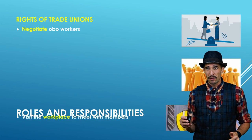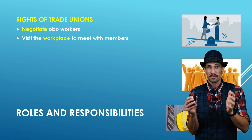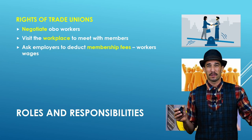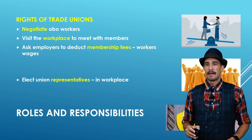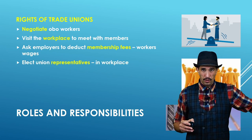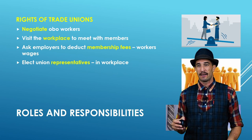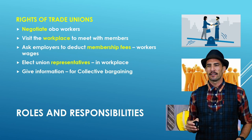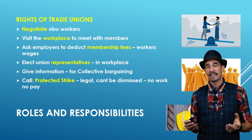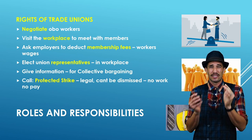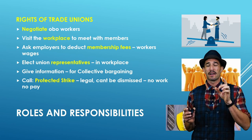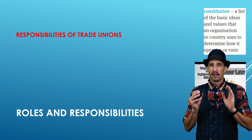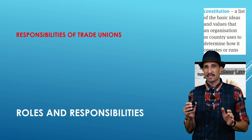People can join a labor union in any industry. The rights of trade unions include: negotiating on behalf of workers, visiting the workplace to meet with members, collecting membership fees as their full-time job, electing union representatives in the workforce to act as a voice and communicating device, providing information for collective bargaining, and arranging strikes — which must be legal, called a protected strike. Remember: no work, no pay.